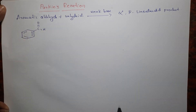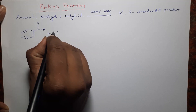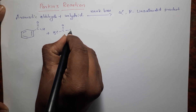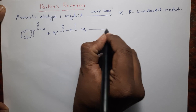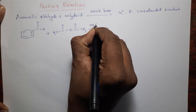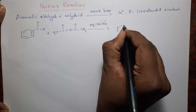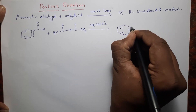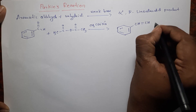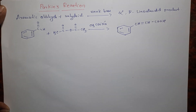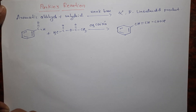This is our aromatic aldehyde — benzaldehyde. It is reacted with anhydride, specifically acetic anhydride, in presence of a weak base. It gives an alpha-beta unsaturated product. This is called Perkins reaction. Now we are going to discuss about the mechanism of Perkins reaction.